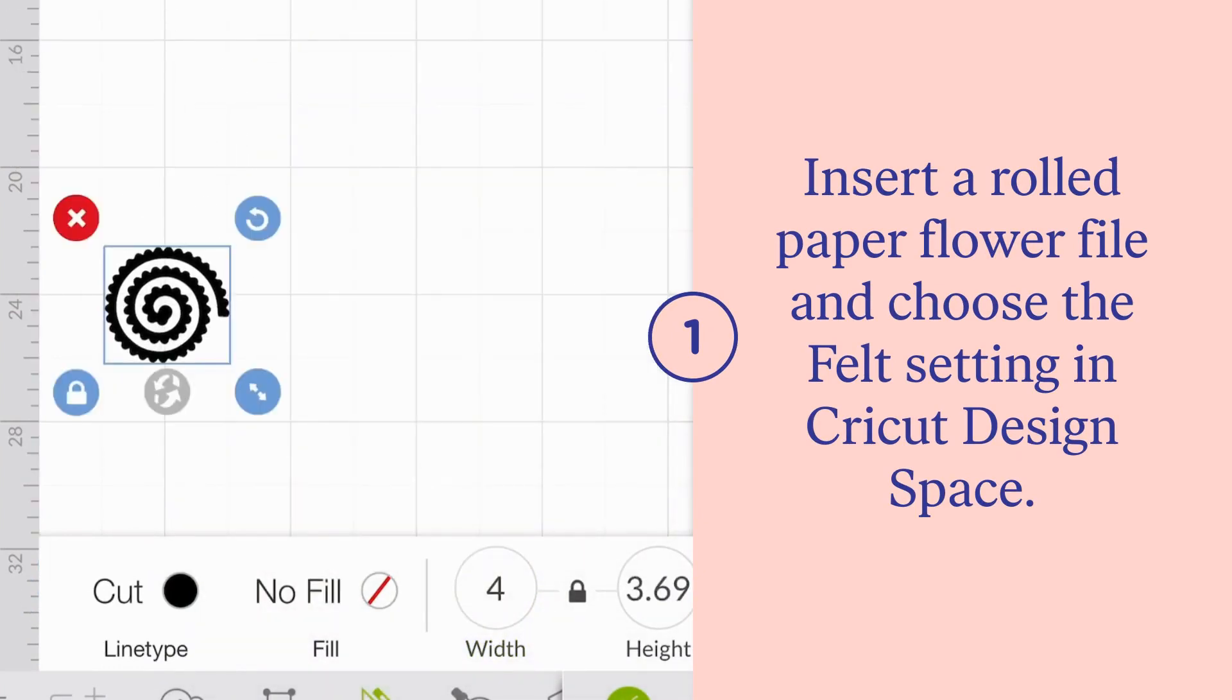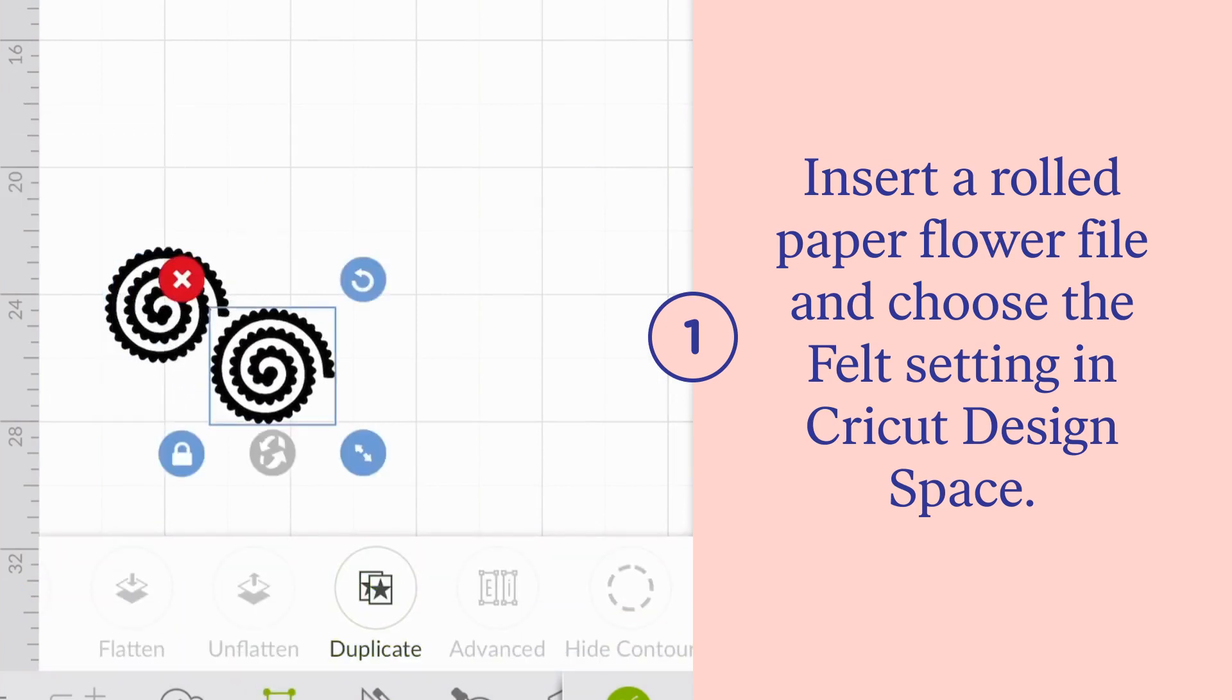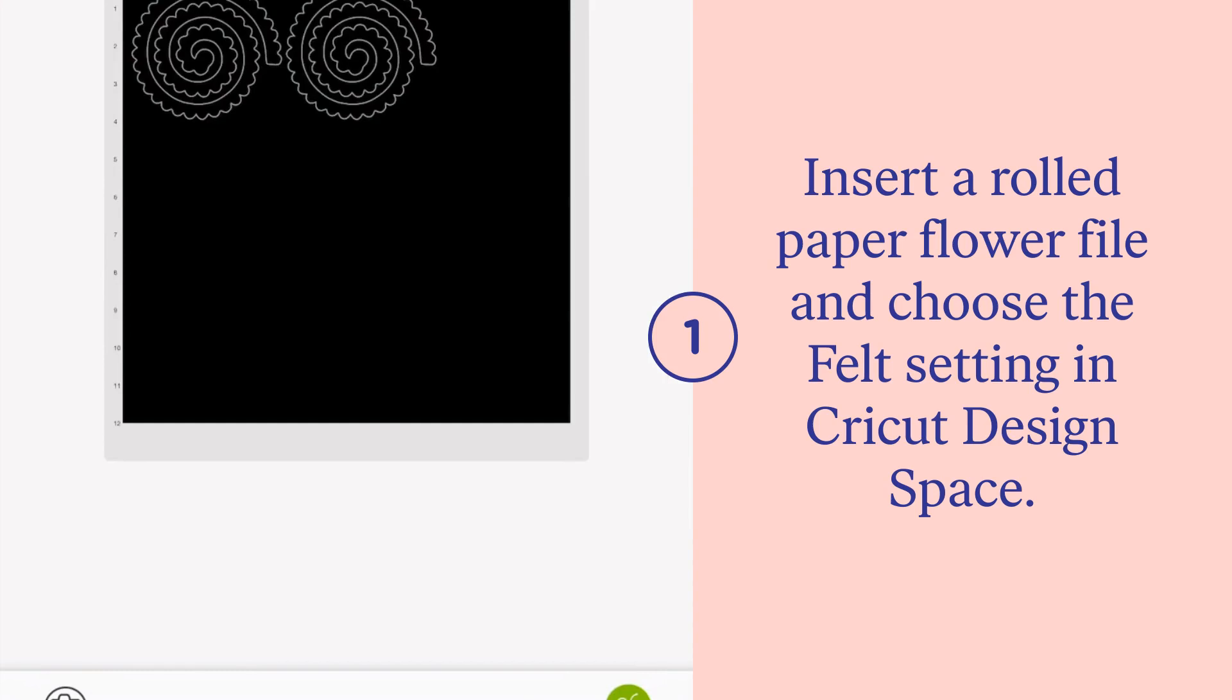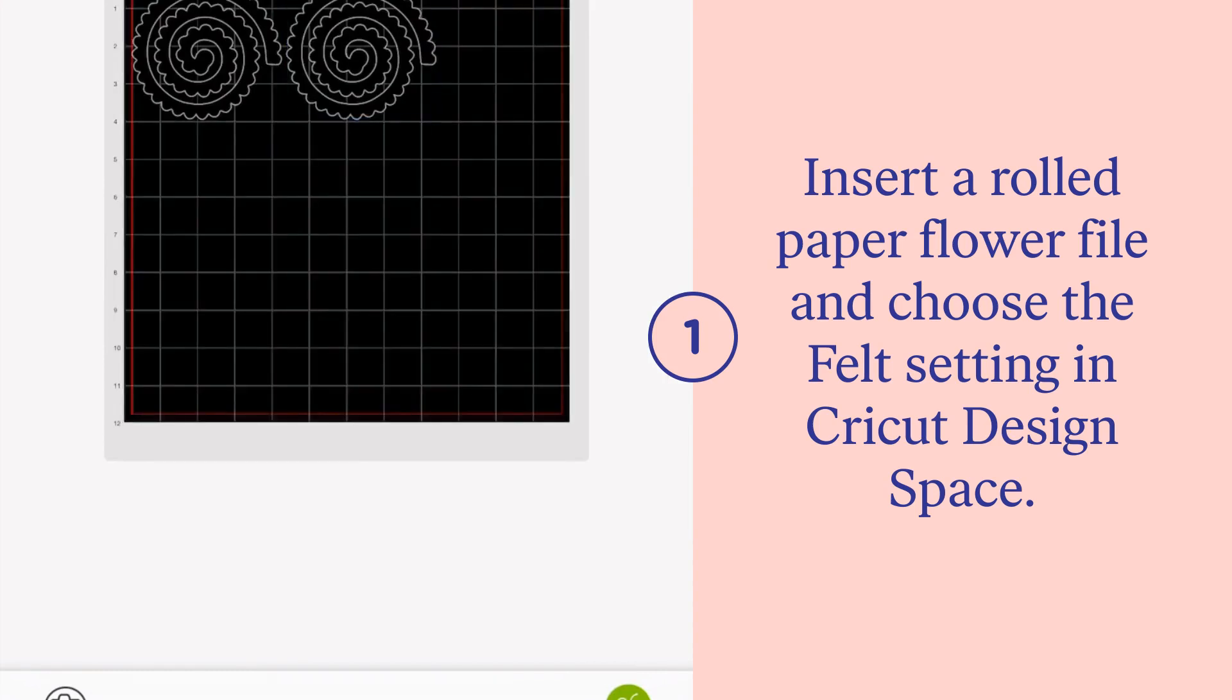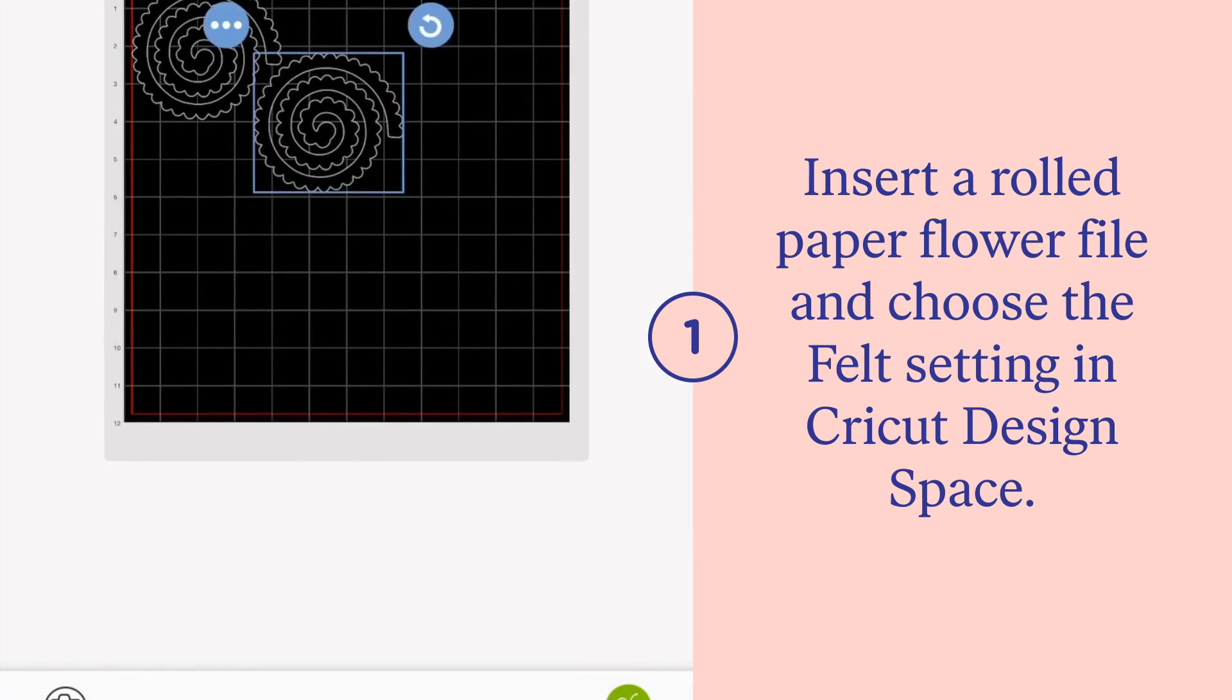Then you need to resize your image so that it fits on your piece of felt. I am using an 8 by 8 inch piece of felt, so I am doing two 4 inch flowers. Then on this mat, I'm arranging the flowers so that they can both cut on the piece of felt that I have.